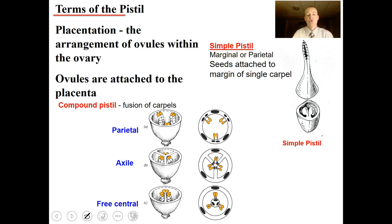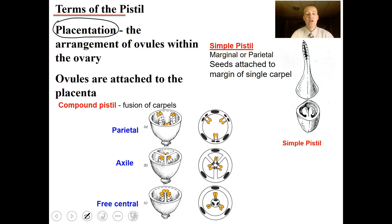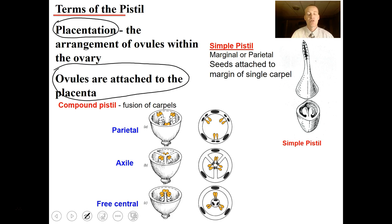Placentation is the term for the arrangement of ovules within the ovary. The ovules are attached to a placenta — an attachment point to the parent plant where nourishment can be exchanged, similar to how we have a placenta. There are different types of placentation: parietal placentation, axial placentation, and free central placentation.